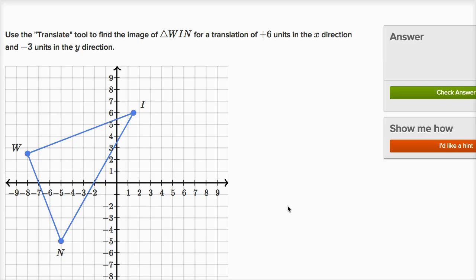Let's do an example on the performing translations exercise. Use the translate tool to find the image of triangle WIN for a translation of positive six units in the x direction and negative three units in the y direction.